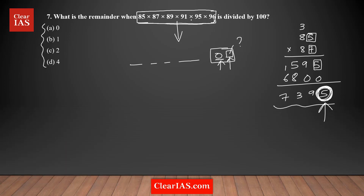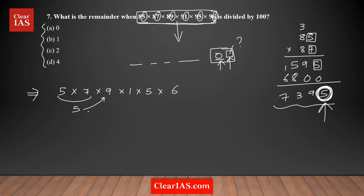To find the unit digit of the entire product, just list the unit digits of each number: 5 × 7 × 9 × 1 × 5 × 6. Five times seven ends in 5; five times nine ends in 5 (since 45); five times one ends in 5; five times five ends in 5 (since 25); then five times six ends in 0 (since 30).